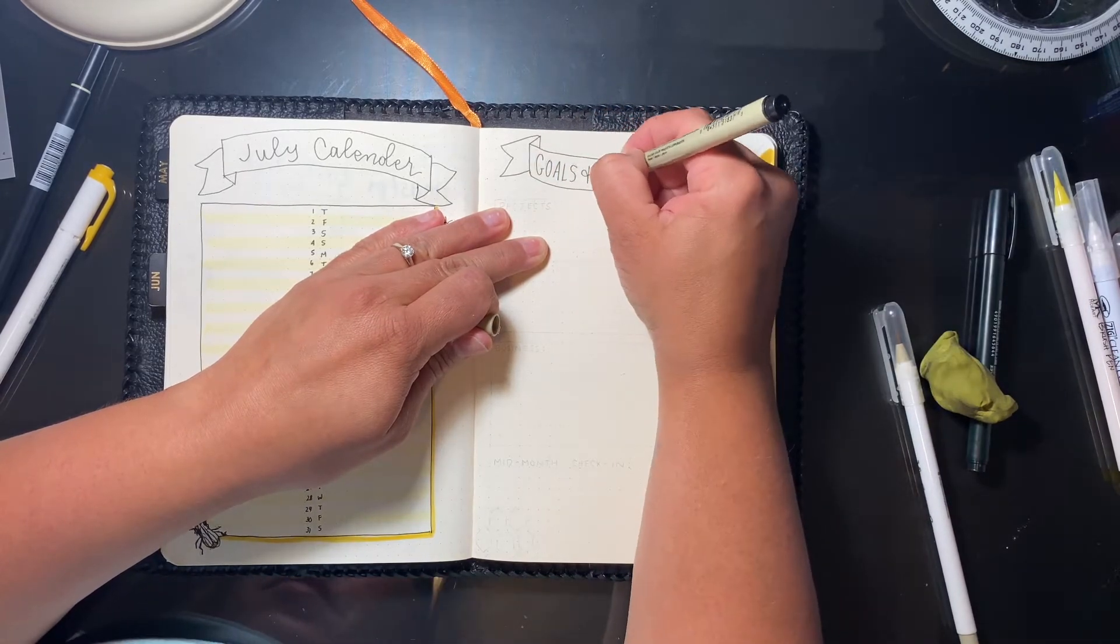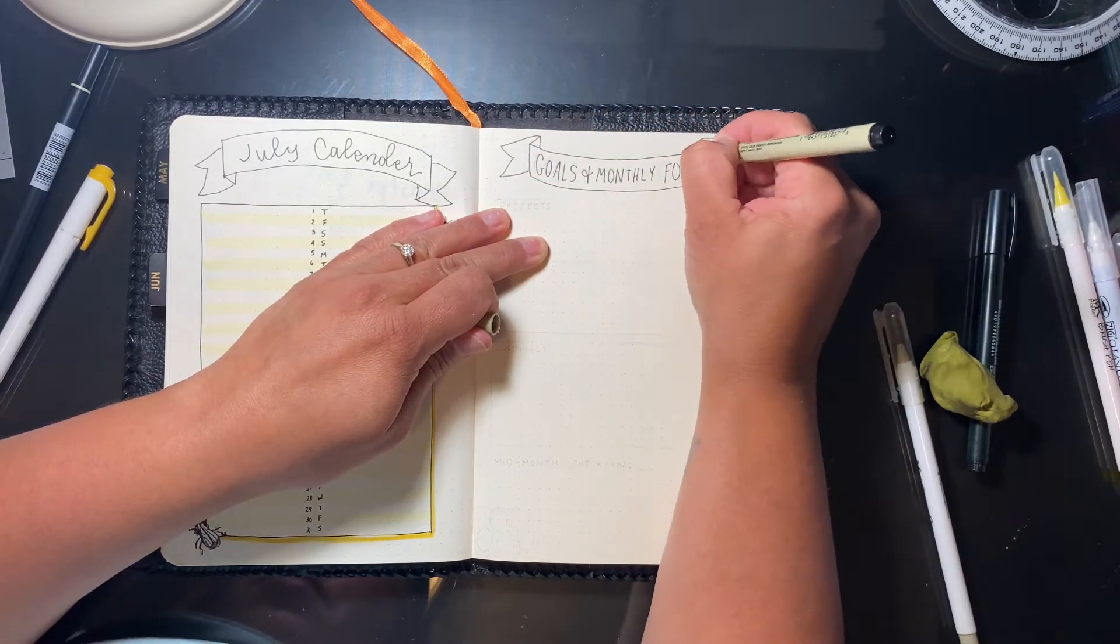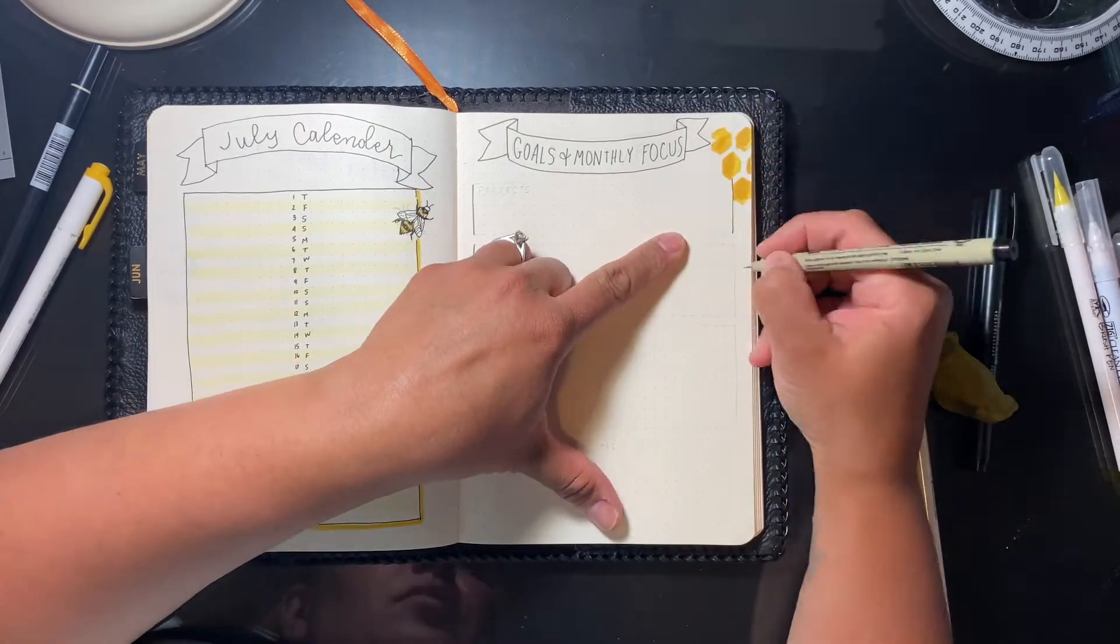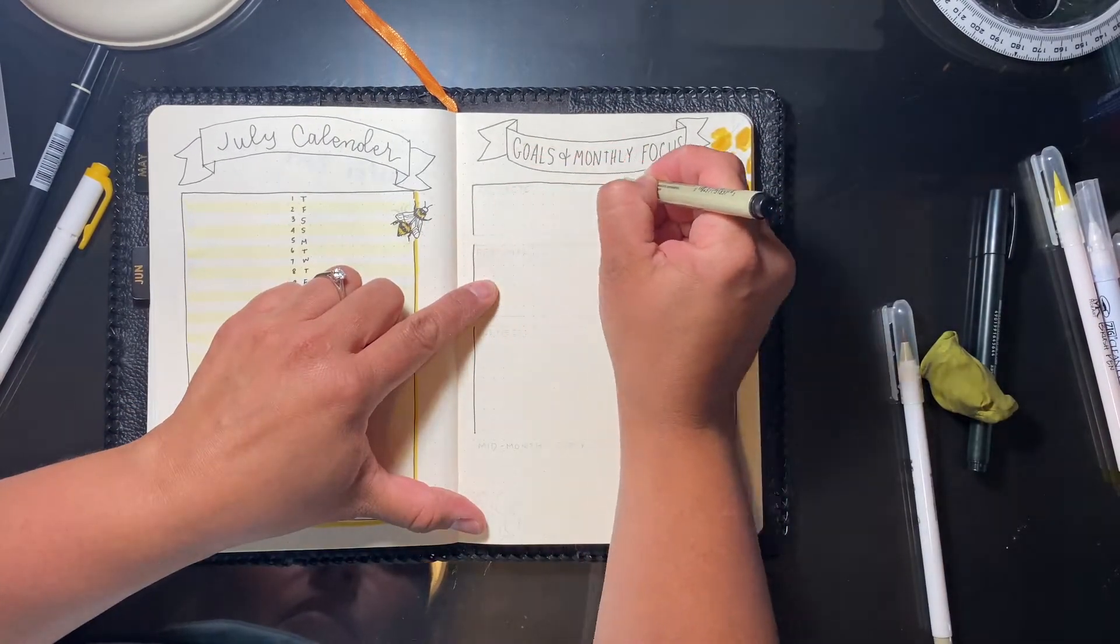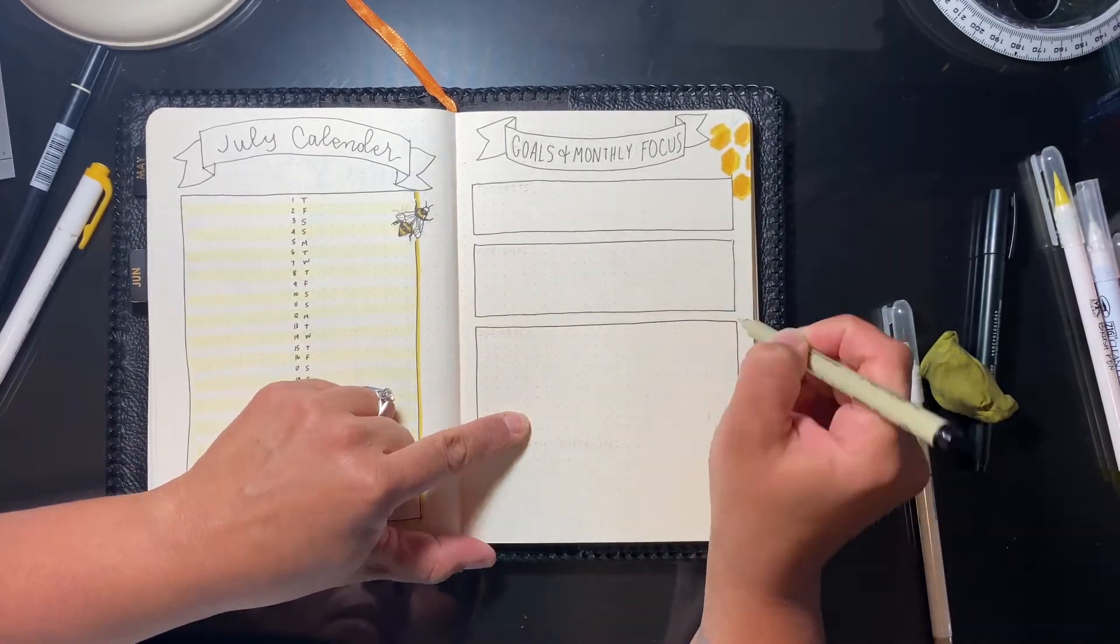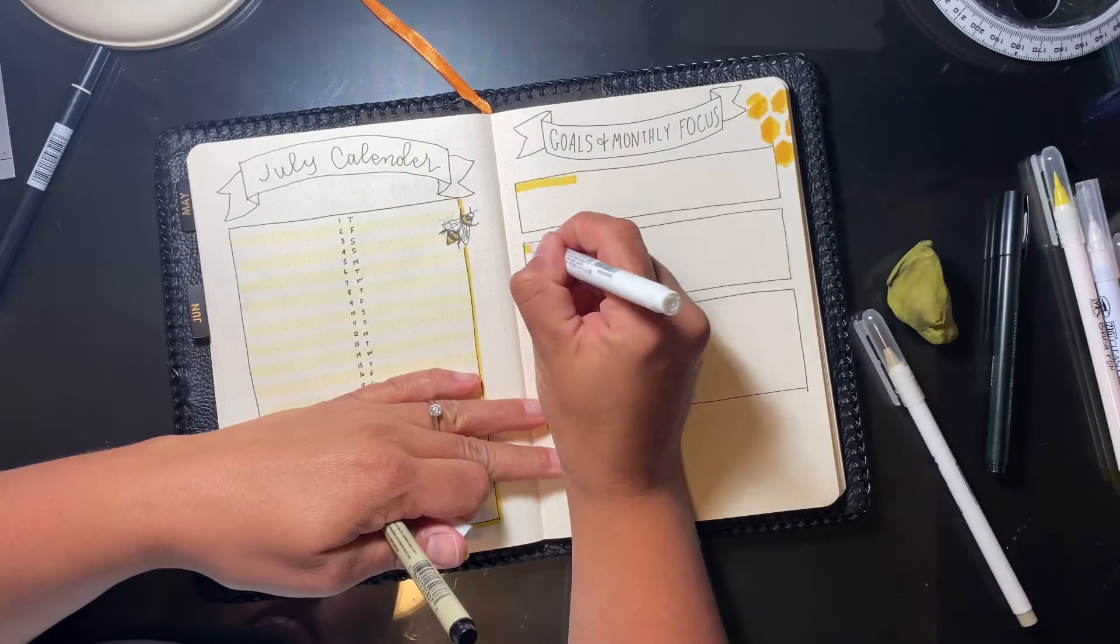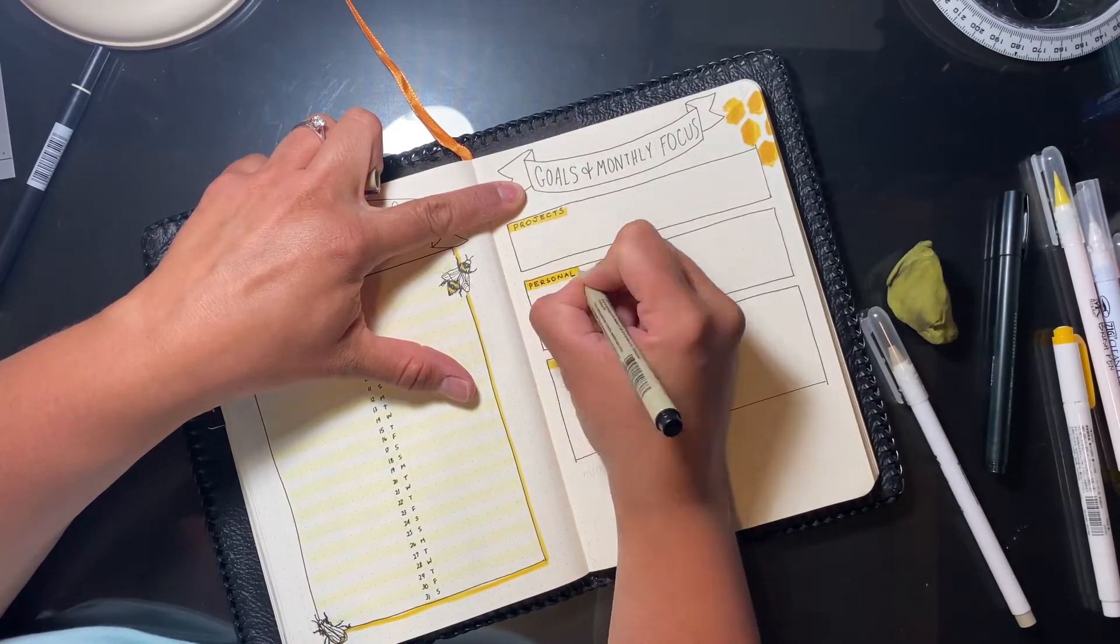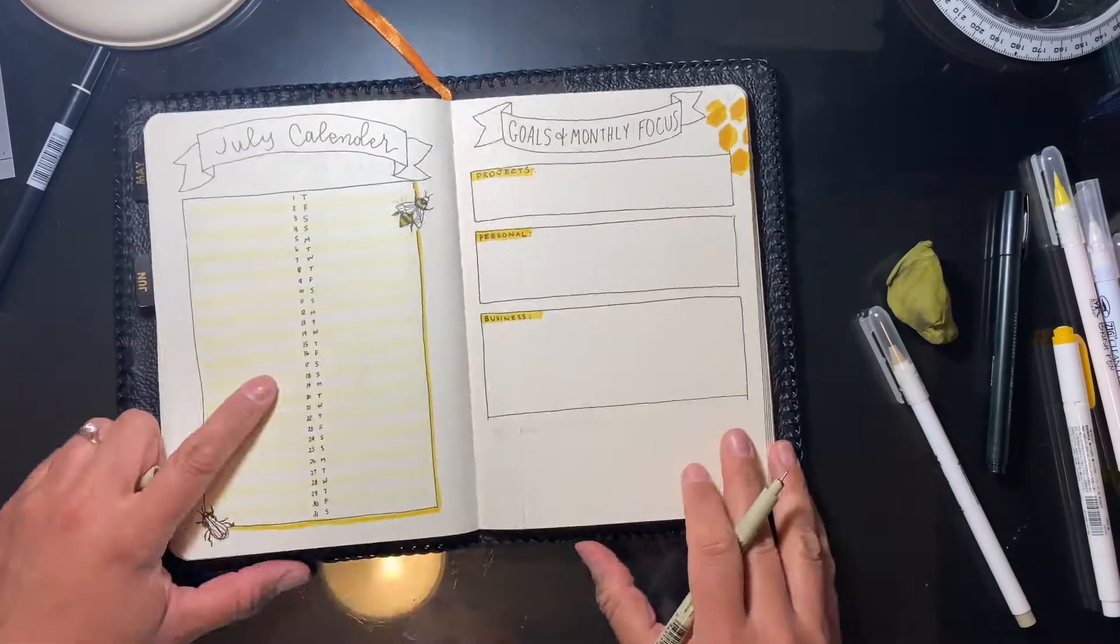The spread across from the calendar I decided to call 'Goals and Monthly Focus.' I'm tracking projects, personal, business, and then I have a mid-month check-in at the bottom.